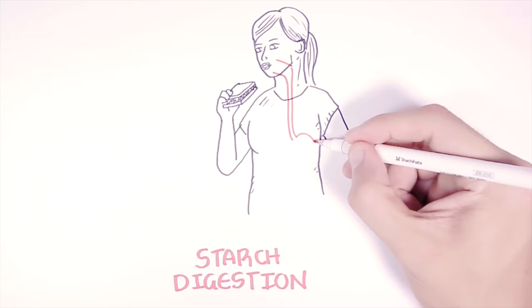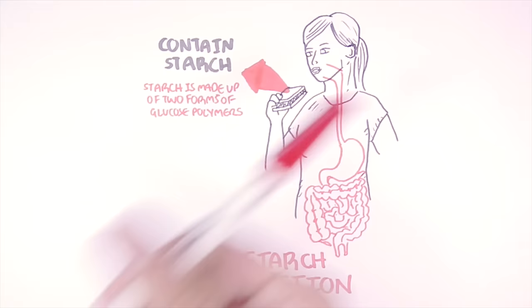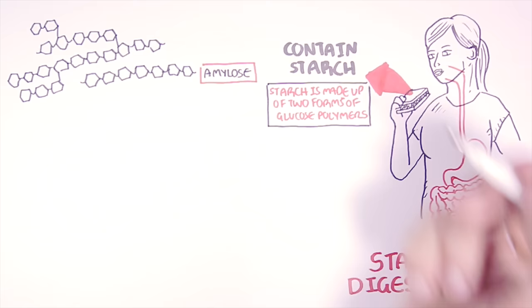So we begin here with a human eating a sandwich. The bread contains starch. Starch is made up of two forms of glucose polymers. These are the linear amylose and the branched amylopectin.